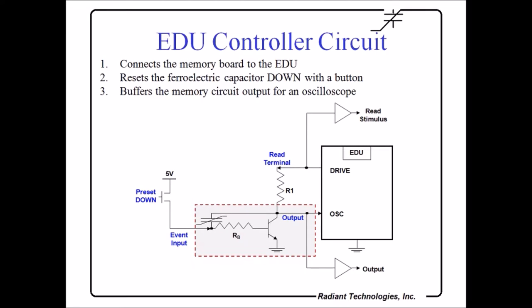So here's the circuit for the controller board. Here's the memory board, and R1. The EDU down the telephone cable. There are op amps powered from the EDU on the board, which allow an oscilloscope to be attached to the circuit, so you can monitor what's going on at this node and at the output node without disturbing the circuit. These are totally passive.